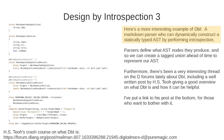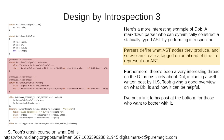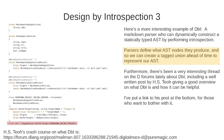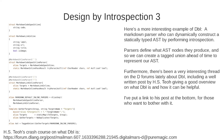Here's a more interesting example of design by introspection: a markdown parser where you can dynamically construct a statically typed AST by performing introspection. At the top we have two structs serving as AST nodes, then our parsers which define which AST nodes they produce, allowing us to create a tagged union ahead of time to represent our AST. A template called gatherTargets does compile-time magic to select all the targets members of our parsers, removes duplicates, and returns a tuple of all the AST symbols. There's also been a well-written post by HSTO on the D forums giving a good overview of DBI and how it can be helpful — I'll link it at the bottom.